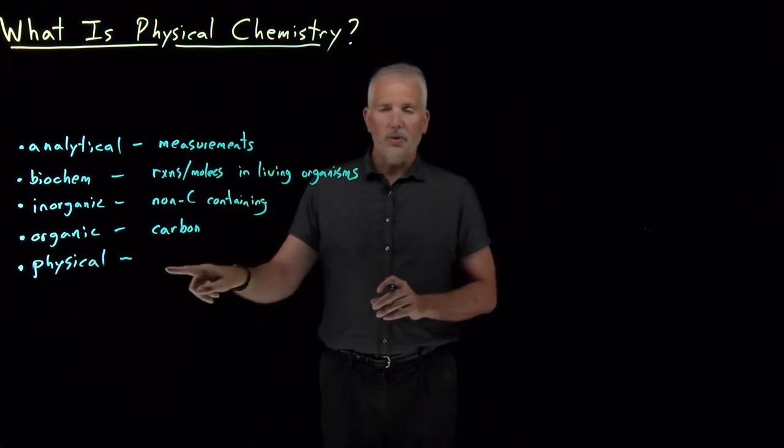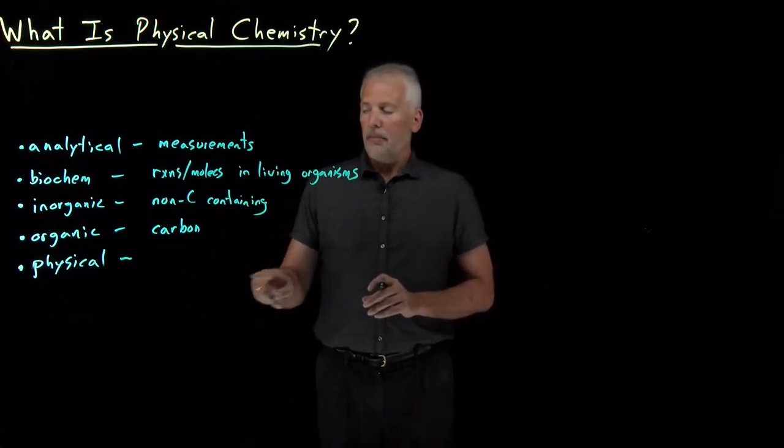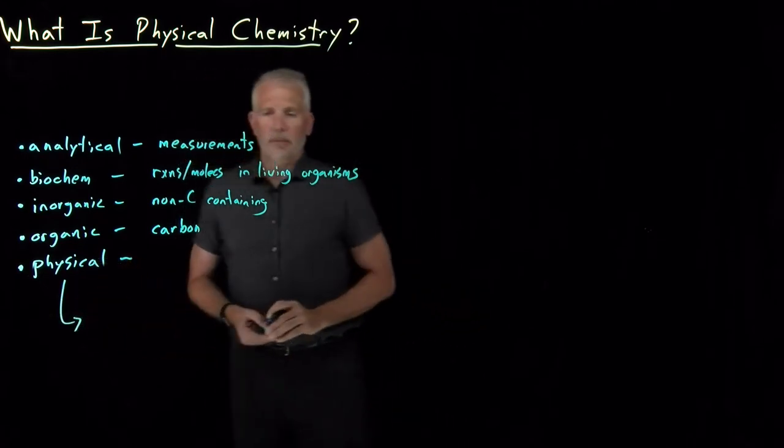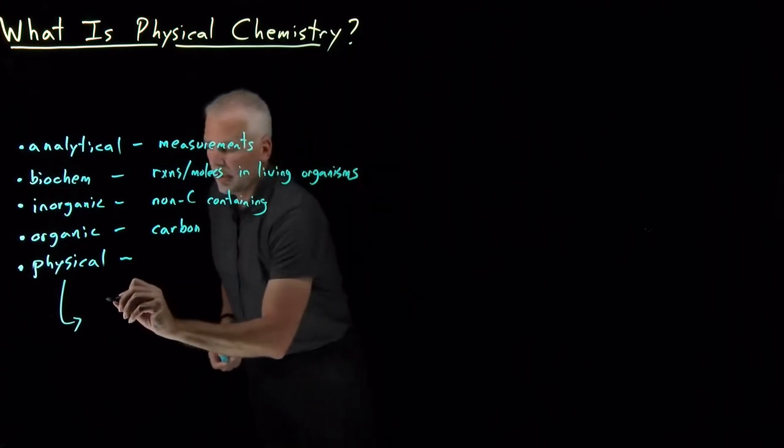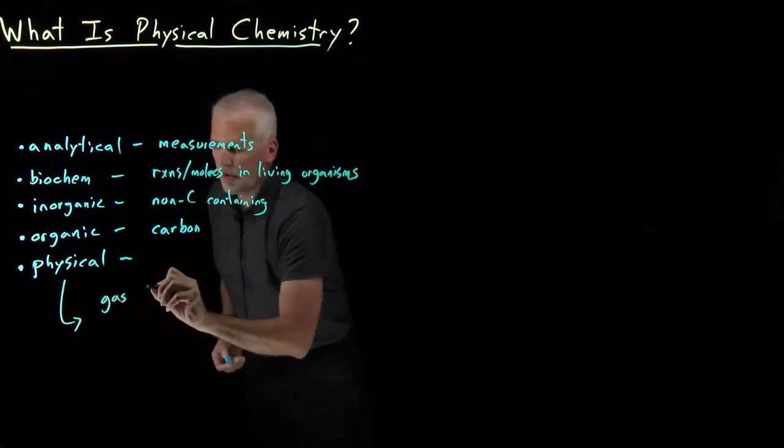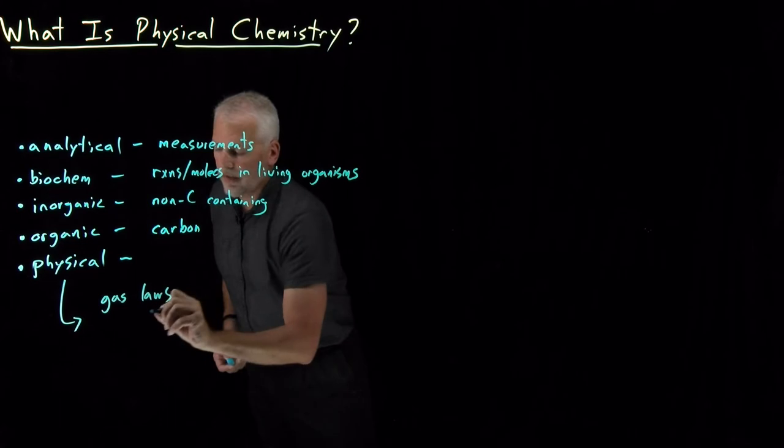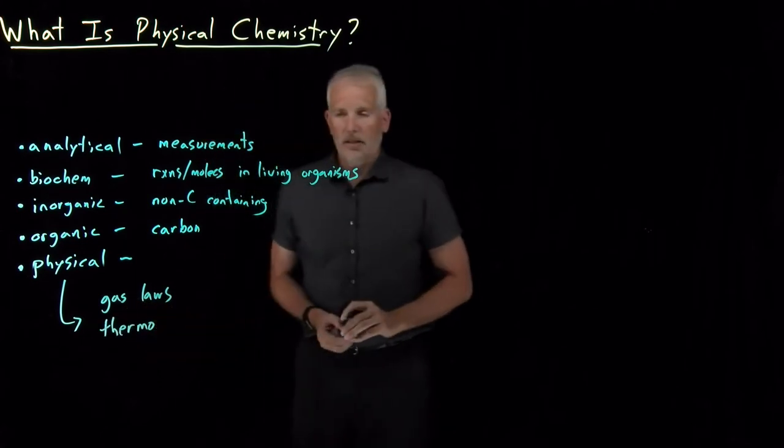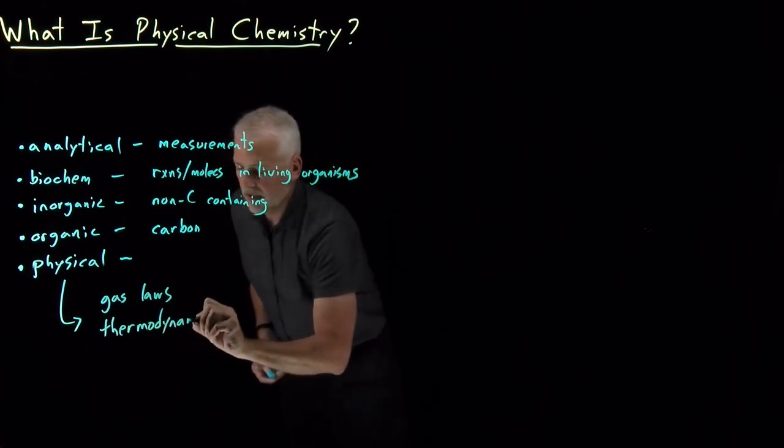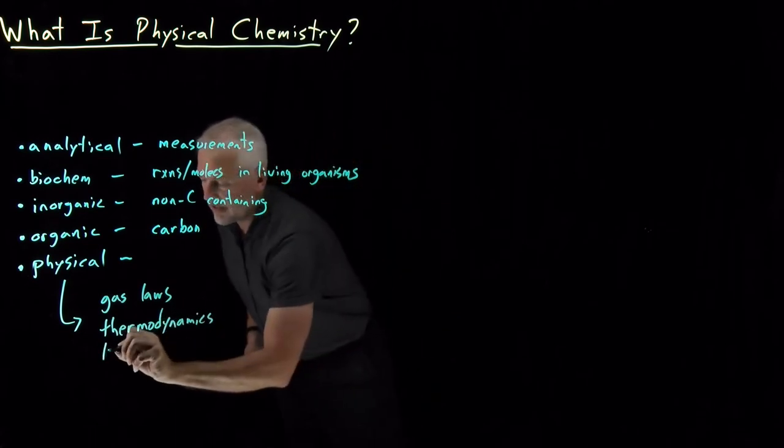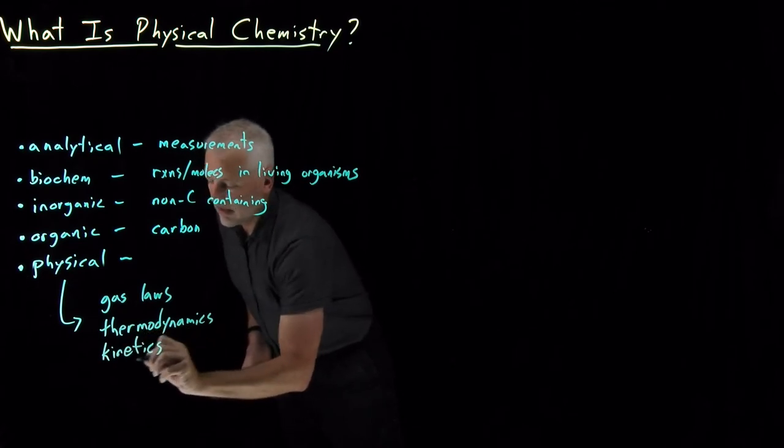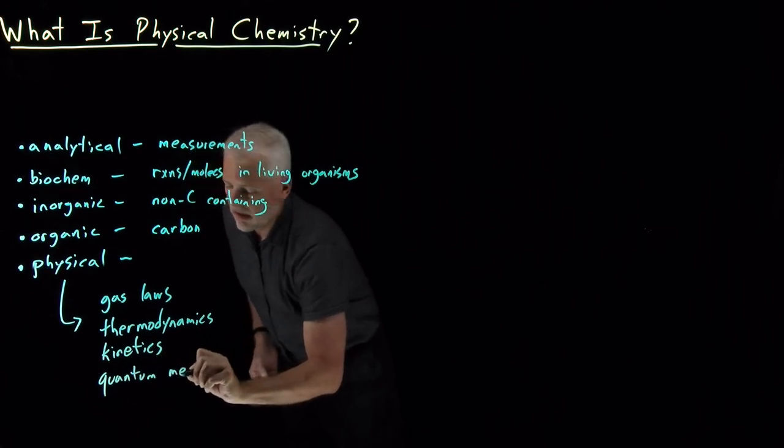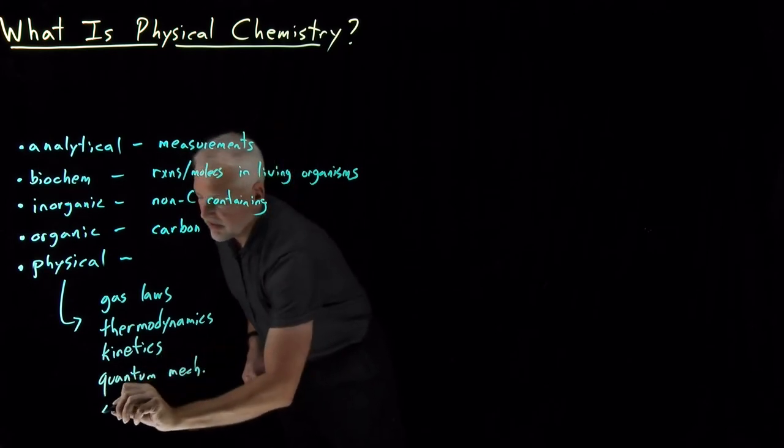We can get some insight into the thing that makes physical chemistry physical chemistry by considering the various topics that are typically studied in a physical chemistry course. So in a typical p-chem course, it's divided into several different subtopics: gas laws, thermodynamics, kinetics, quantum mechanics, and statistical mechanics.